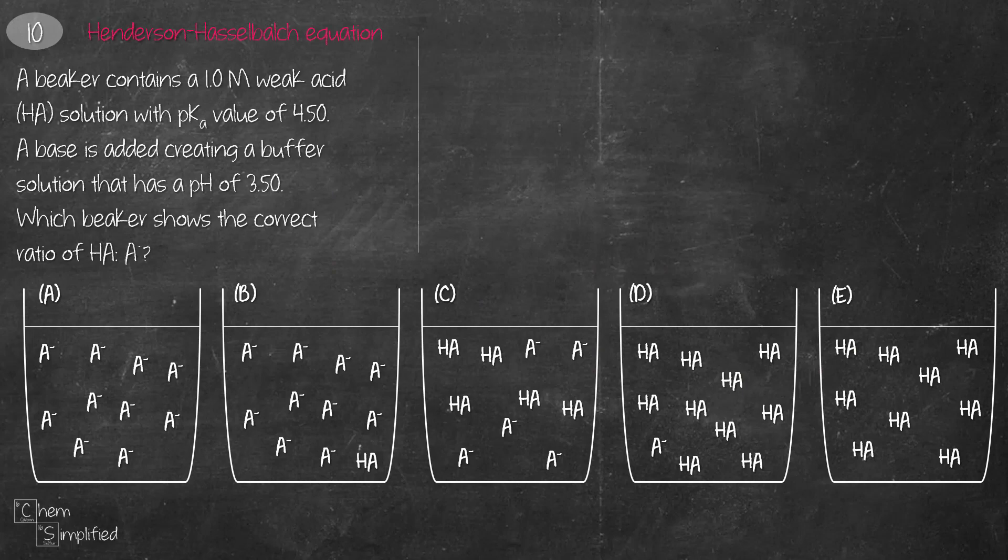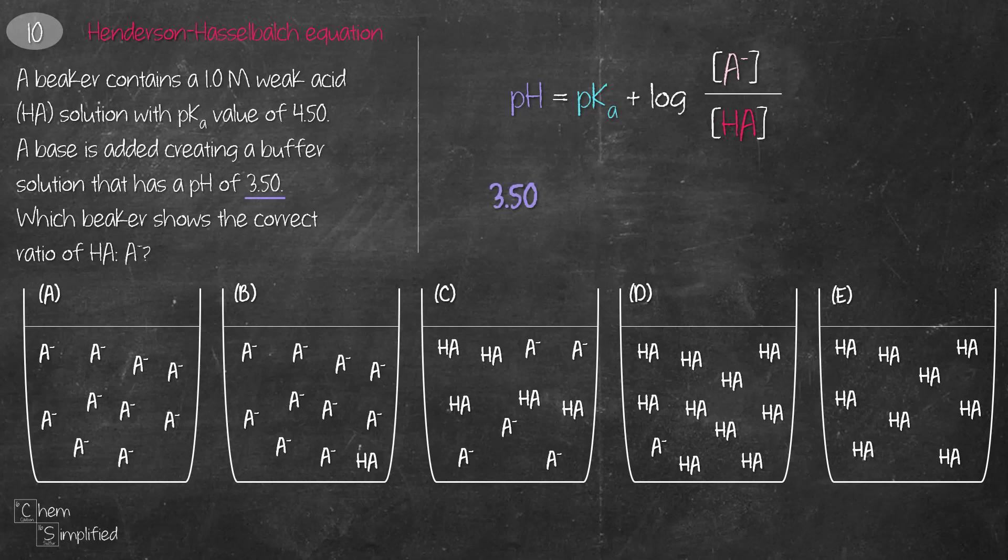This question requires Henderson-Hasselbalch equation and log knowledge. From the question, we know that pH is 3.5 and the pKa is 4.5. In order for the pH to be 3.5, the log term is going to have to be negative 1. That's basic algebra. Now in order for us to get a negative 1 value, it'll have to be log of 0.1, which is essentially log of 1 over 10. And what that means is that the molar ratio of the conjugate base, which is A- to the acid, which is HA, has to be 1 to 10 ratio. And Beaker D correctly shows this ratio, which is A- to HA is 1 to 10. If you need to brush up on any of these acid-base topics, here's the playlist for you.